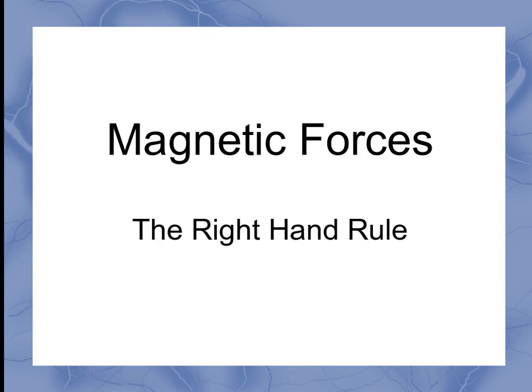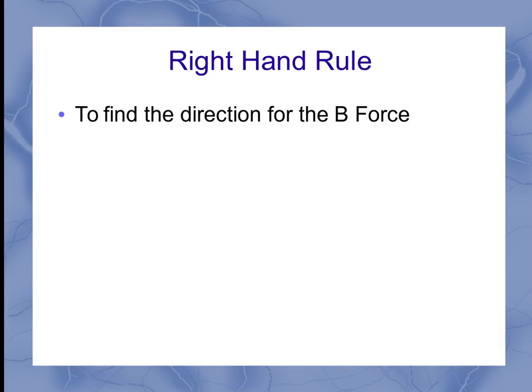Now let's look at magnetic forces, particularly the right hand rule. The right hand rule is used to find the direction for the B force.